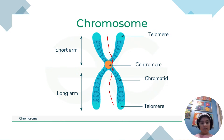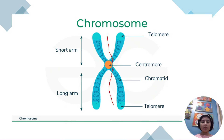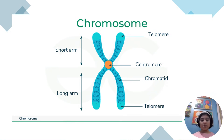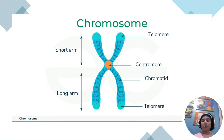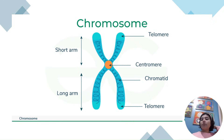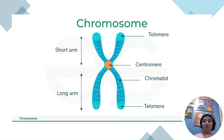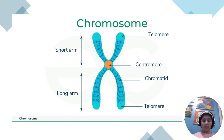Each half of the chromosome is called a chromatid. That's important to know for both meiosis and mitosis, because sometimes the chromatids separate and sometimes the chromosomes separate, which I'll go into in further detail later.